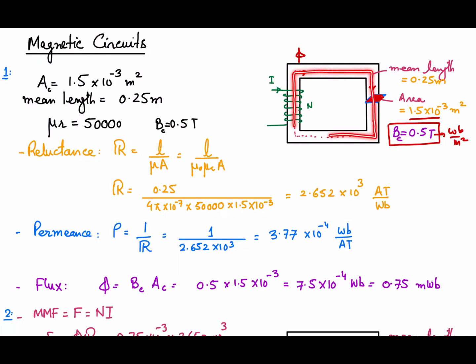The flux moves along the mean length indicated in the diagram, which is 0.25 m. The cross-sectional area and mean length are given, and this material has a relative permeability of 50,000 — meaning it is 50,000 times more permeable than air or free space. We are first required to calculate the reluctance.